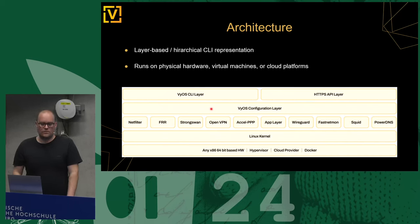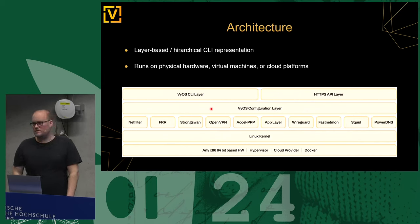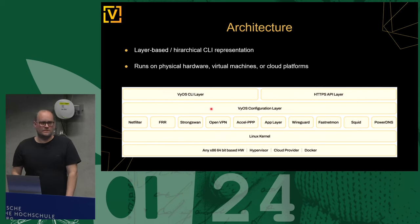On top of this configuration layer there is the CLI. We also provide an HTTPS API to interact with the system and change the configuration. I learned from the NOC today that they are using the HTTPS API to push firewall rules into the system automatically.